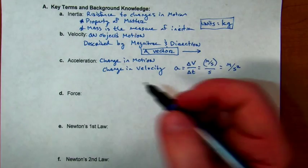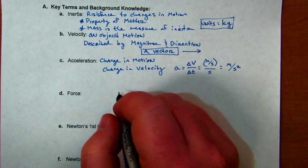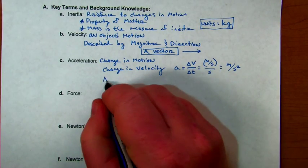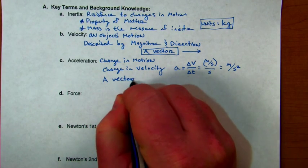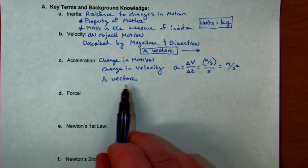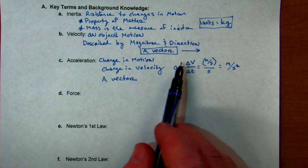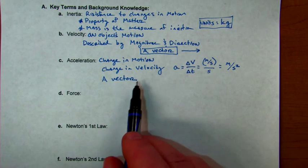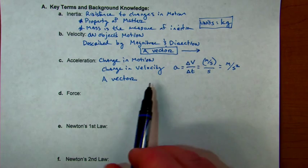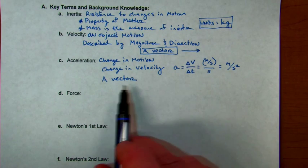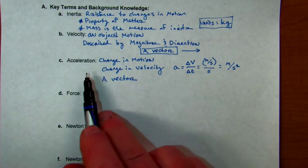This is also a vector, so it has both magnitude and direction. You can think about changing velocity in several different ways. You could change the magnitude of velocity, or you could change the direction of velocity—both are changes. Any change in velocity is an acceleration.